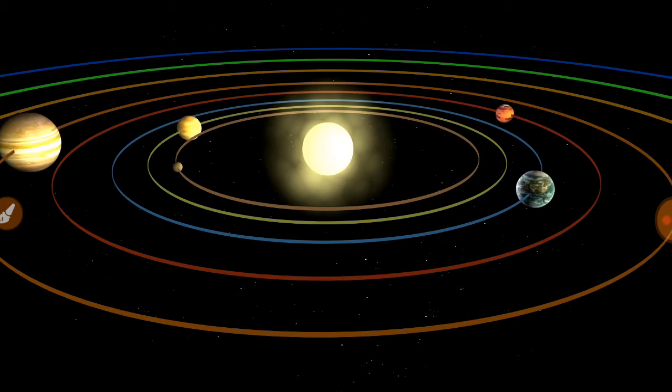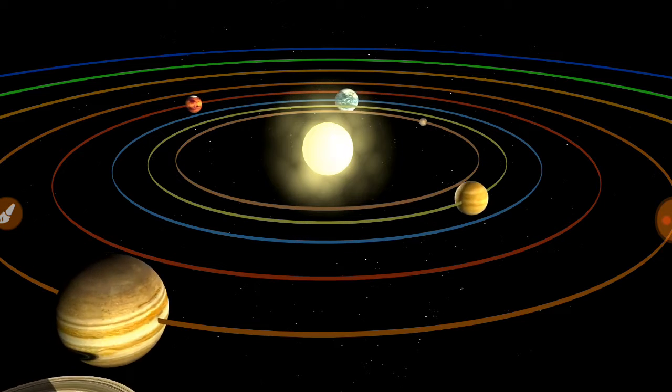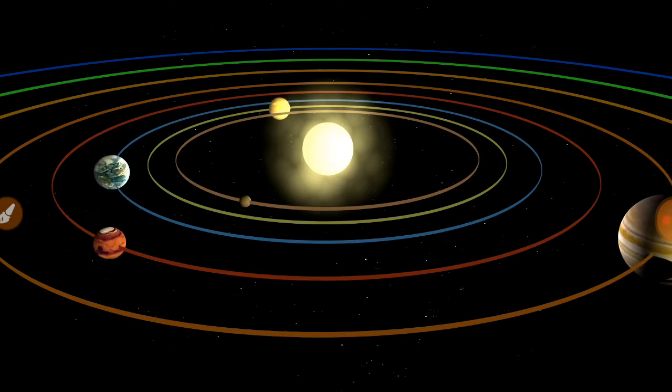Mercury is the nearest planet and Neptune is the farthest planet from the sun.